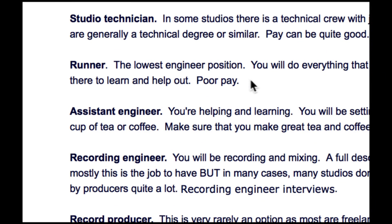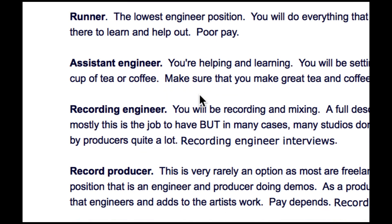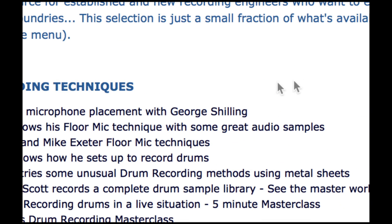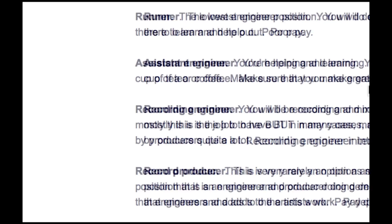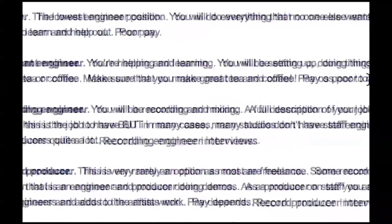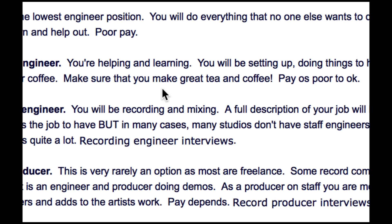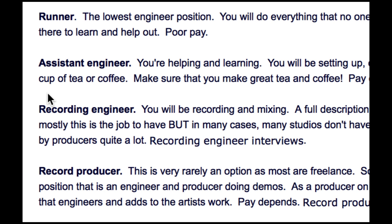A runner is the lowest engineering position — the person just starting out, the one who gets coffee, who the engineer sends to find ten XLR cables that are 25 feet each in five minutes. You might have to build some patches or other things too. The assistant engineer has worked their way up a little bit — they may still have to get things for folks, the pay is poor to okay, but the assistant engineer helps out the most senior engineer.